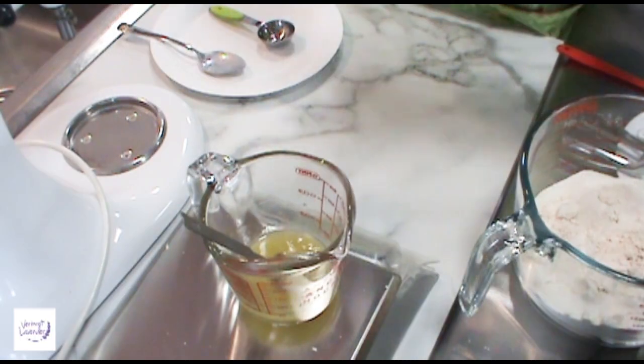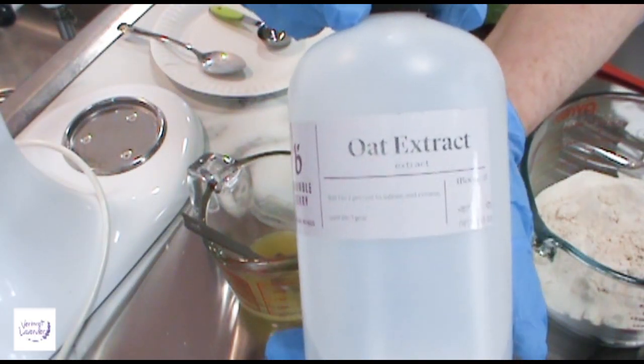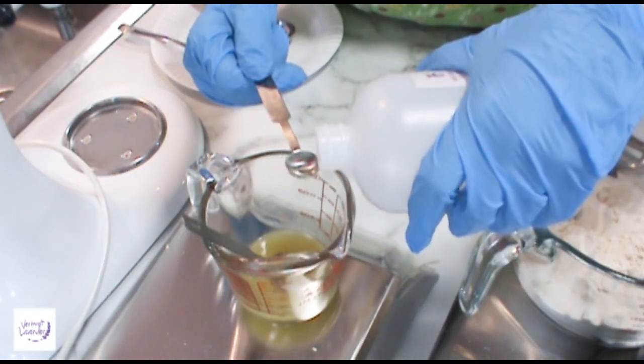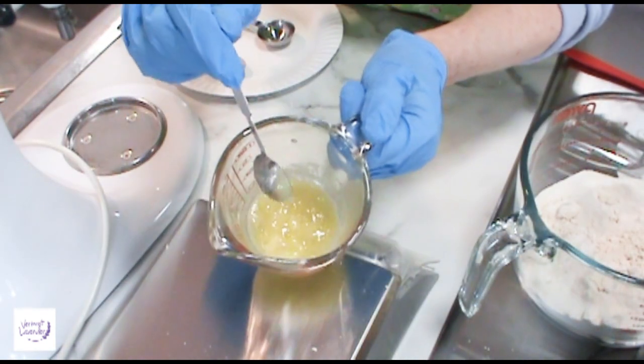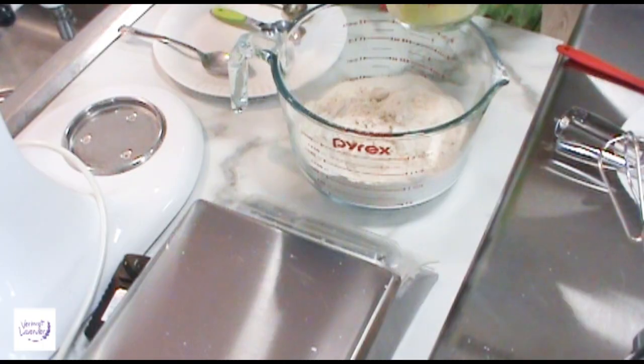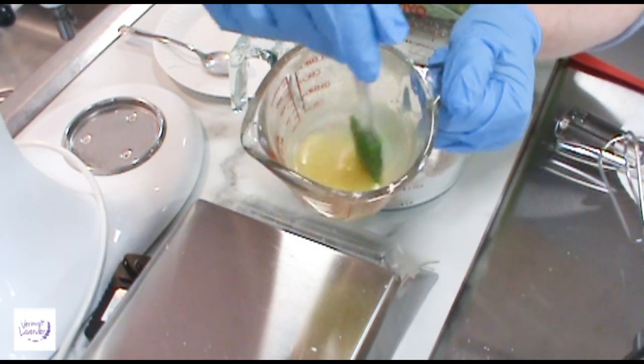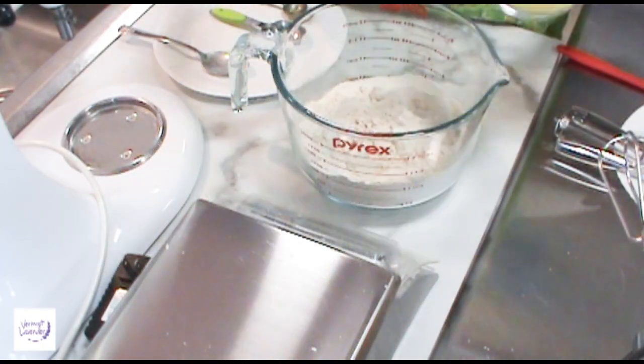Then I'm going to also add one milliliter of my oat extract. I think I'm going to have to melt this a little bit. It got a little solid on me. So now this is perfect. Look how liquid this is. I'm going to pour it right in here.